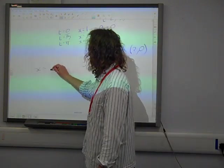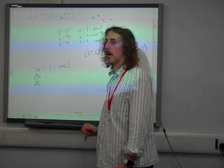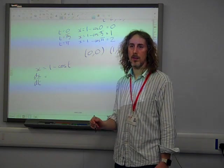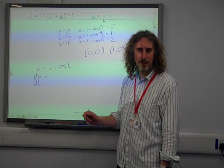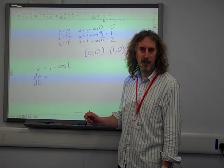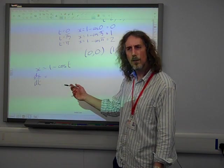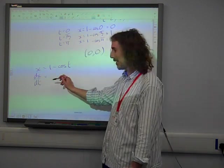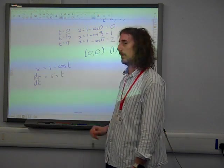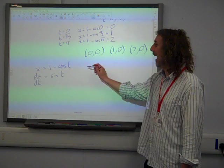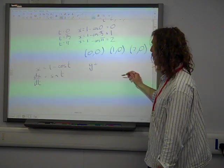So x is 1 minus cos t. So dx by dt, if we differentiate cos we get... Cos differentiates to minus sin. CD music system. So cos differentiates to minus, so that just gives us plus sin t, doesn't it? And y was sin t, sin 2t.